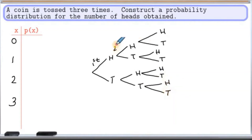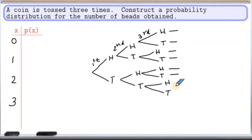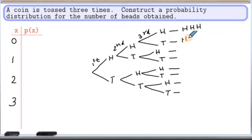So let me label these branches — this is for the second toss, and this is for the third toss. Now let's write down the outcomes. Looking at these branches, this outcome will be head, head, head. This will be head, head, tail. And this will be head, tail, head. This will be head, tail, tail.